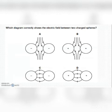Which diagram correctly shows the electric field between two charged spheres — options A, B, C, or D? The correct option is B.